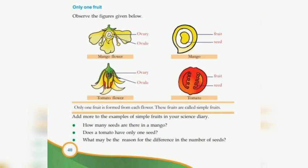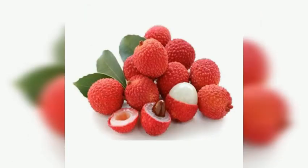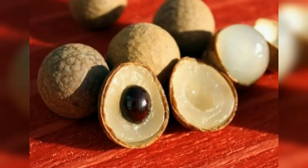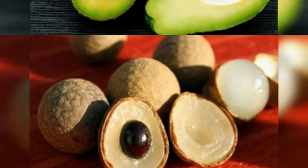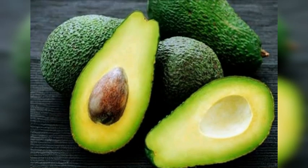Only one fruit is formed from each flower. These are called Simple Fruits. One flower producing one fruit is a simple fruit.